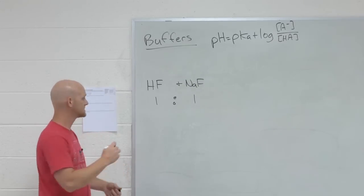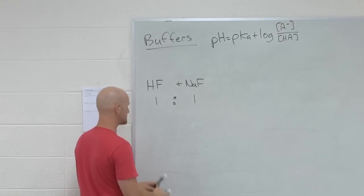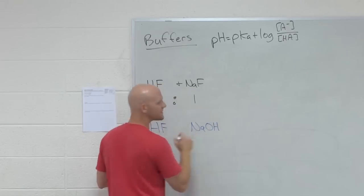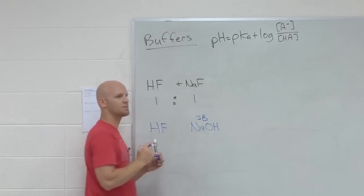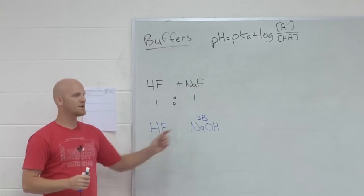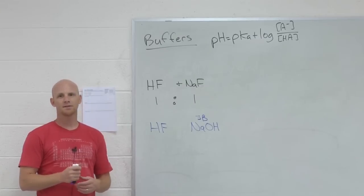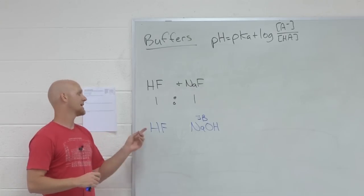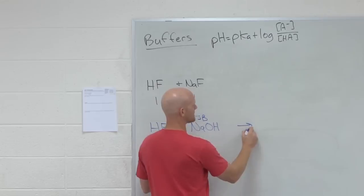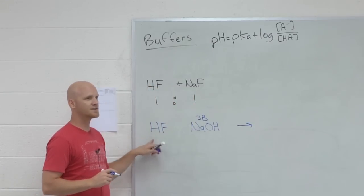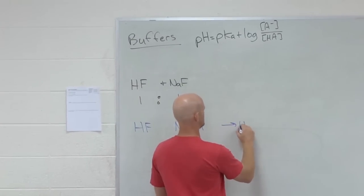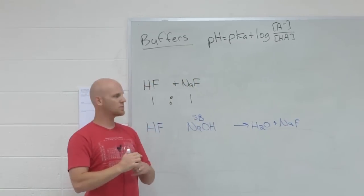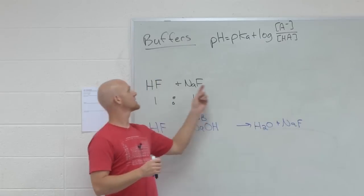But there's another way to make a buffer. I could take my weak acid, HF, and instead of adding the conjugate base, I'm going to add a strong base. With a strong base there, how much does that dissociate? Completely. Which means it'll react with any acid you place it with completely. What acid did we stick it with? HF. What would be the products of them reacting completely? NaF. Oh, look at that. What did we just create some of? The conjugate base.